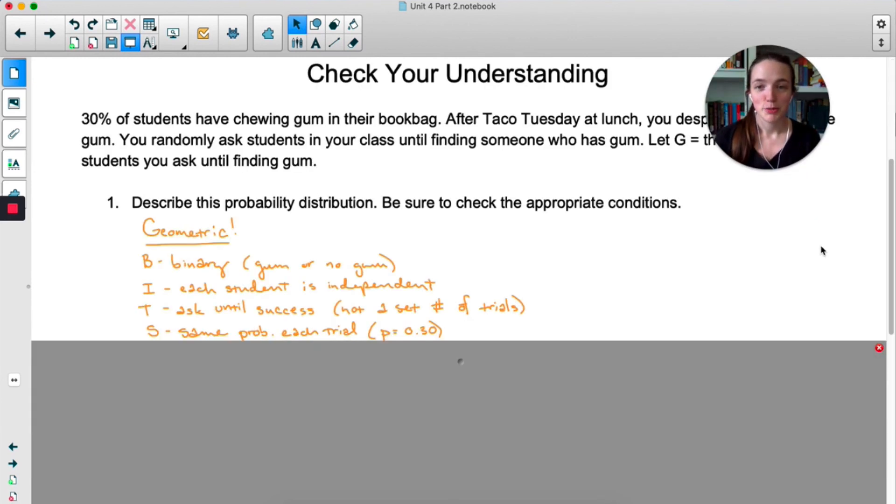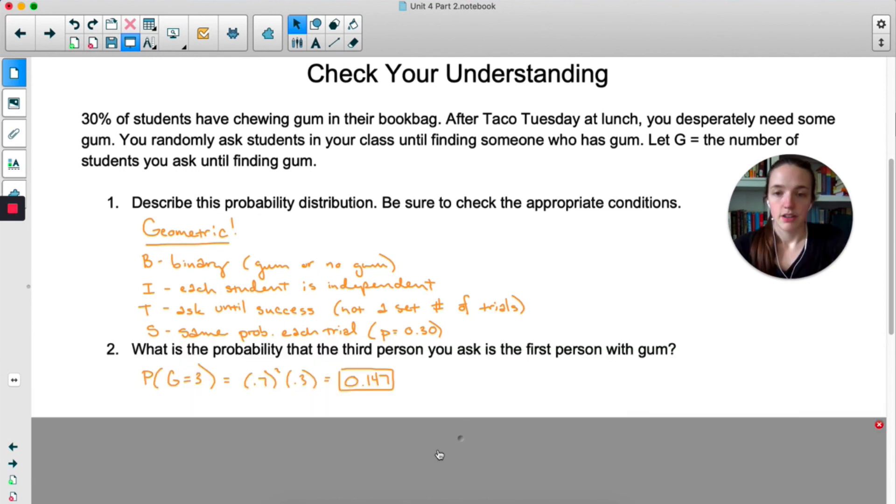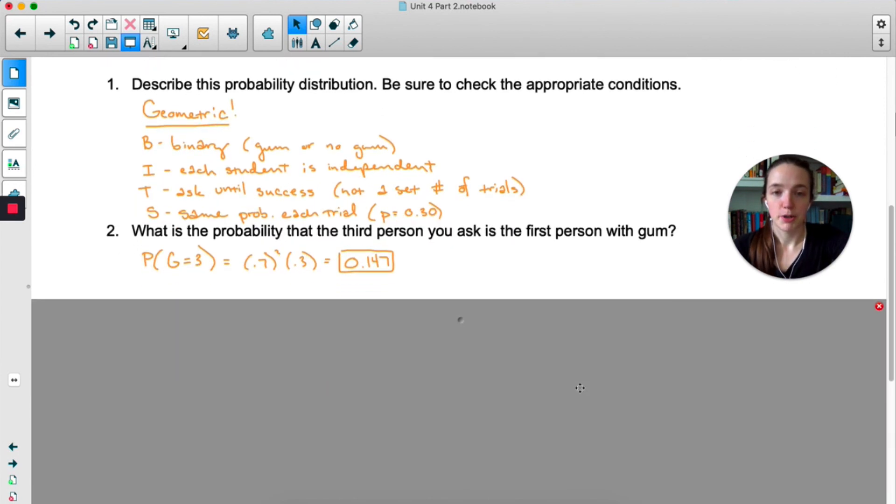So we have a geometric distribution. This fits the BITS acronym. B for binary. A person either has gum or not. I for independent. It's reasonable to assume that one person having gum doesn't influence if other people have gum. T, we're asking until we see success. So there's not a set number of trials. We're just asking until we get gum. And S, it's the same probability of success on each trial. It's 30%. For the probability that the third person is the first one to have gum, that's two fails and one success. So failure is 0.7. We raise that to the second. Then success. There's our probability.